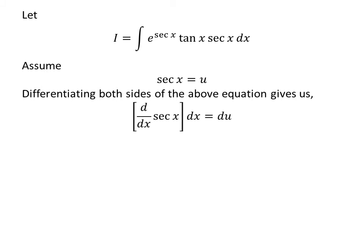Taking the differential of both sides gives us the derivative of sec x with respect to x times dx is equal to du. As the derivative of sec x is tan x sec x, so tan x sec x dx equals du.